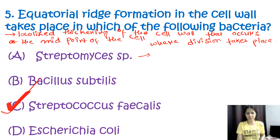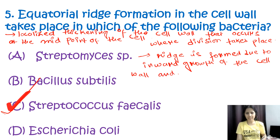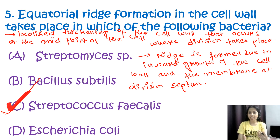This ridge is formed due to the inward growth of the cell wall and membrane at the division septum. In summary, the equatorial ridge is a critical structure in the cell wall of Streptococcus faecalis that facilitates proper division and formation of two viable daughter cells. The correct option is C, Streptococcus faecalis.